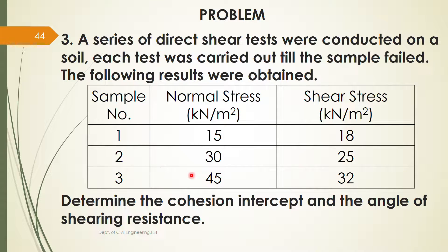We will continue our discussion on determination of shear strength. We will do a problem. A series of direct shear tests were conducted on a soil; each test was carried out till the sample failed. The following results were obtained — three samples were there, normal stress value is given, and the shear stress at failure is also given. Determine the cohesion intercept and the angle of shearing resistance.